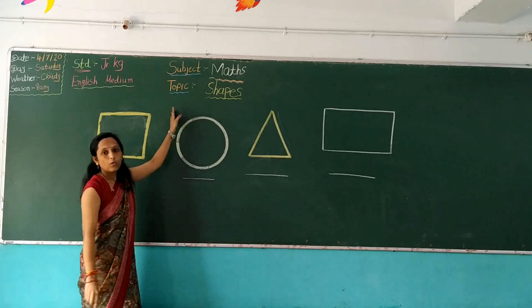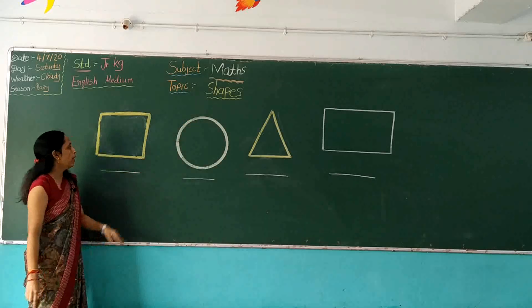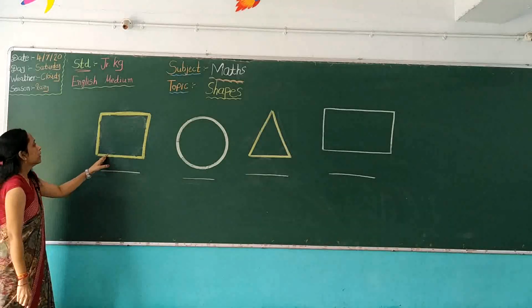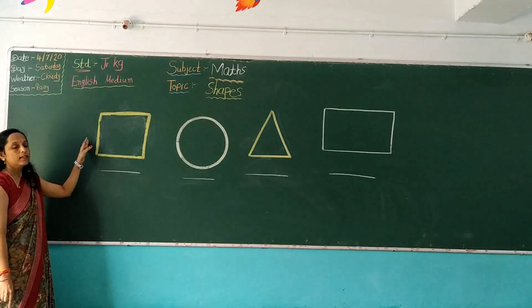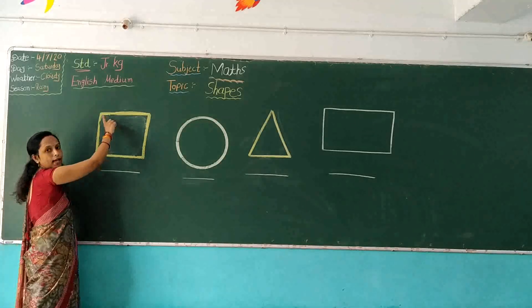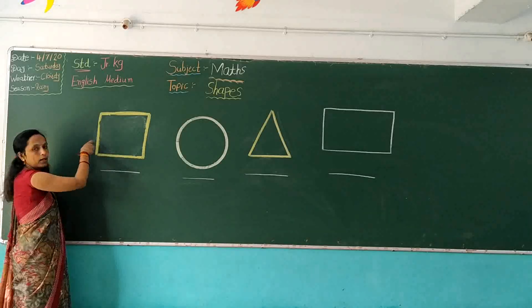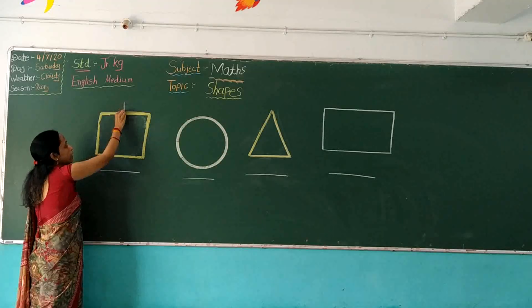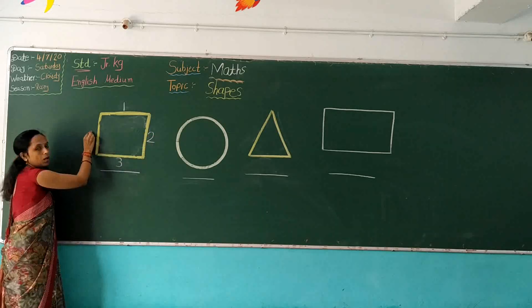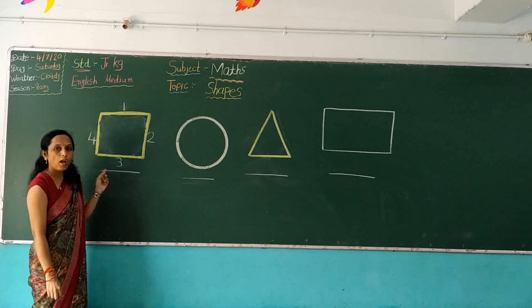Today I am going to teach you shapes. Our first shape is square. Which shape is this? This is a square. It has 4 sides: 1, 2, 3, 4. And it has 4 corners.